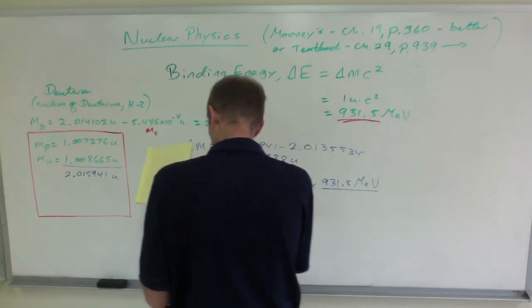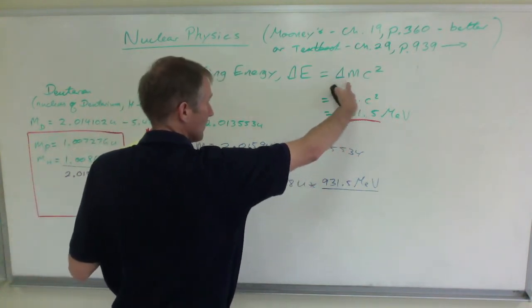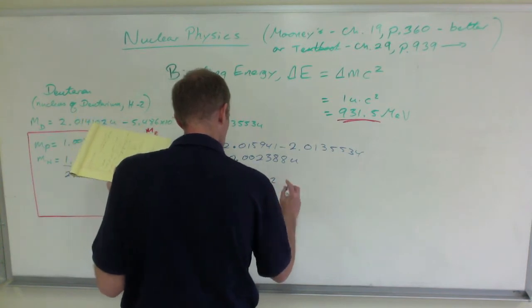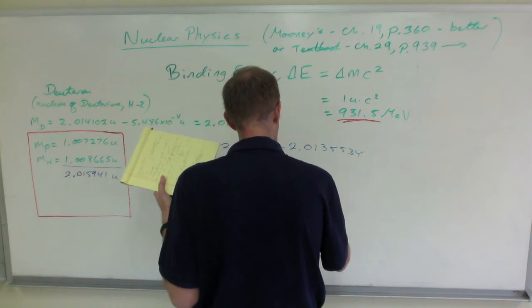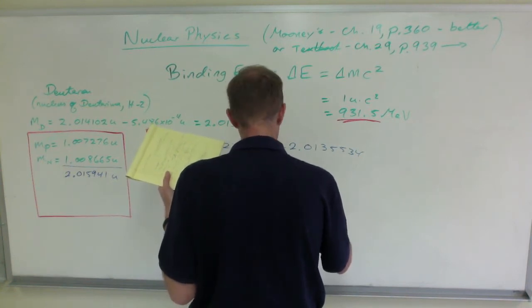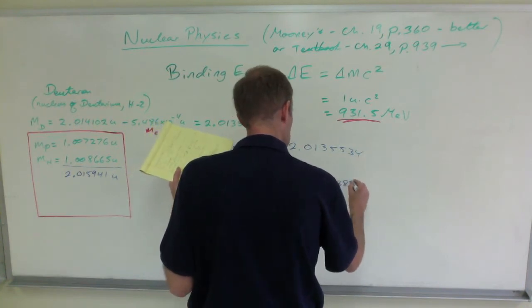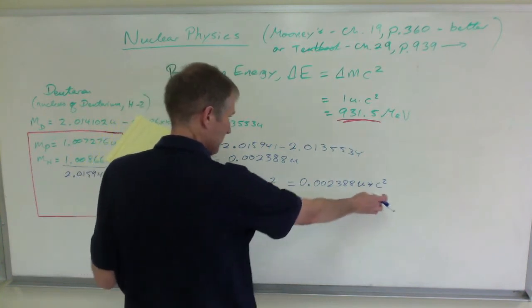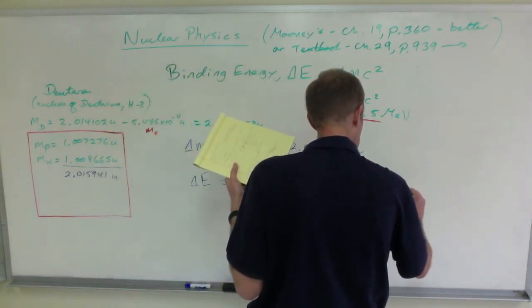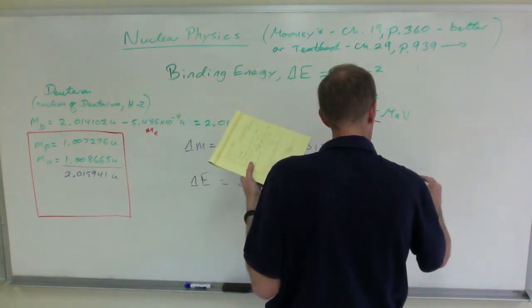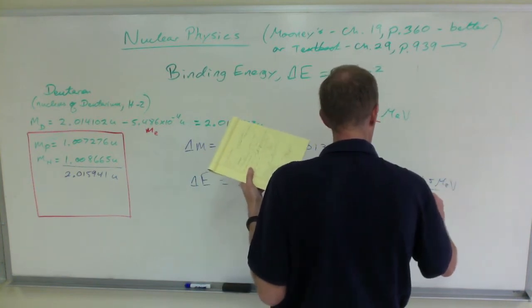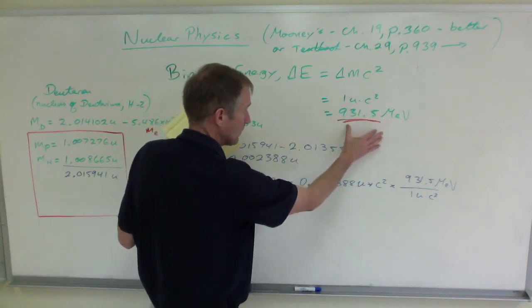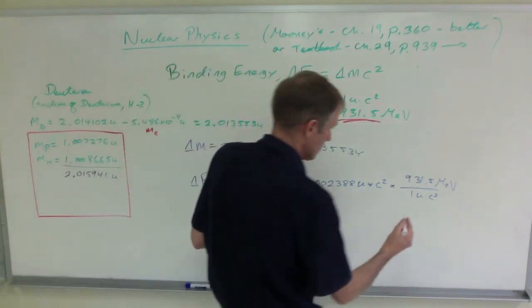So to turn that into an energy, that's going to be 0.002388u times 931.5 mega electron volts. Using this equation, delta mc squared. That's going to be 0.002388u times c squared. I'm not going to put in the number for c squared because my conversion factor is 931.5 mega electron volts per 1u c squared.